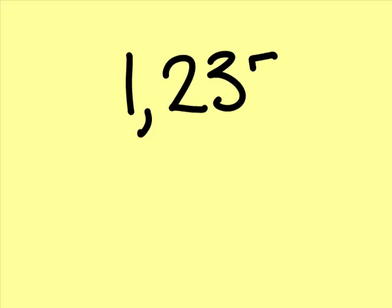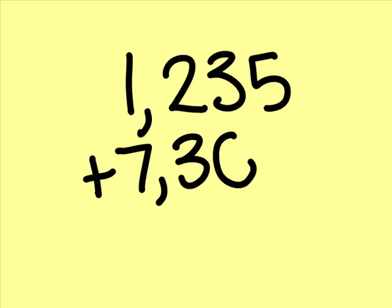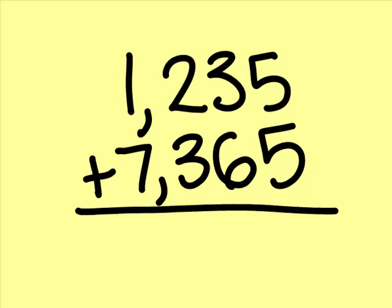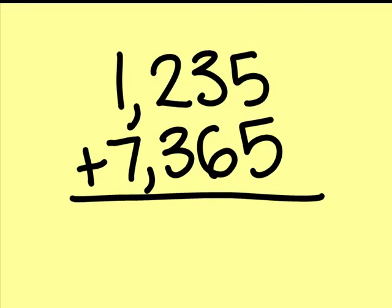Lastly, let's try a more difficult problem. 1,235 plus 7,365. In this problem, as always, we first have to add the right-most digits together. 5 plus 5 is 10, so the second digit, the zero, goes on the bottom and the 1 on top of the next row to the left.